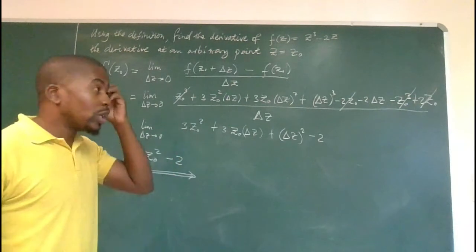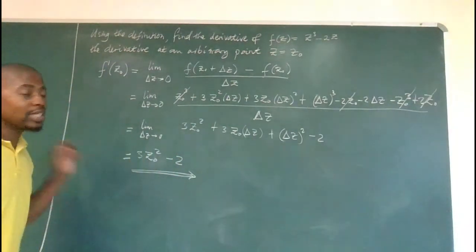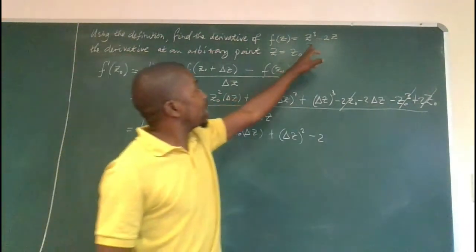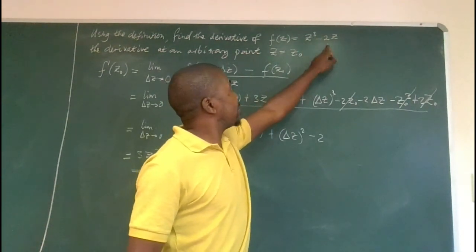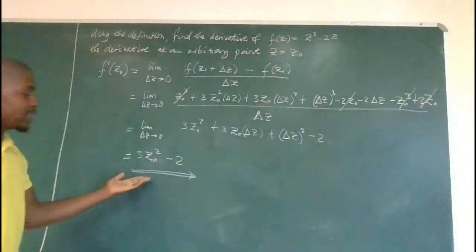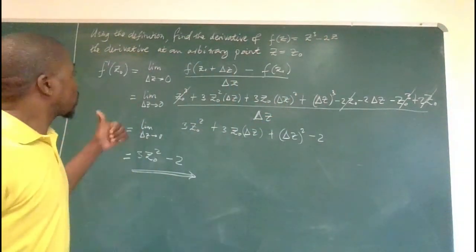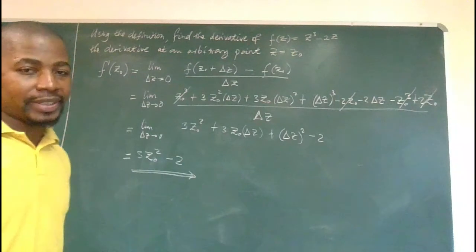So the derivative of that function at point z naught is three z naught squared minus two. You can quickly check if your answer is correct by merely differentiating here. If you differentiate this with respect to z, it will be three z naught squared minus two, which is exactly that. So this is the answer for that question. Thank you.